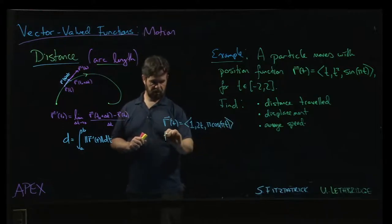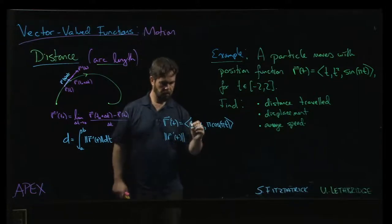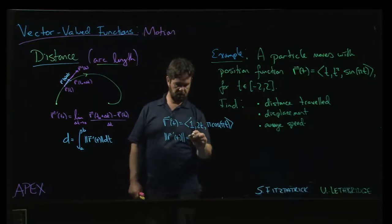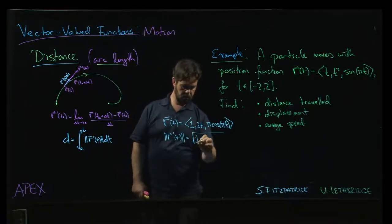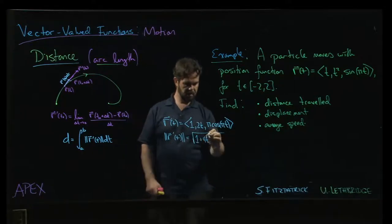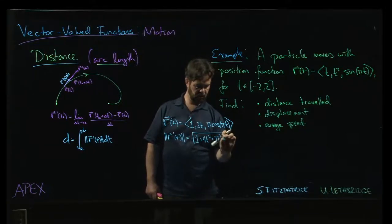Okay, so the magnitude of r prime, well, that's going to be the square root of 1 plus 4t squared plus pi squared and then cos squared.